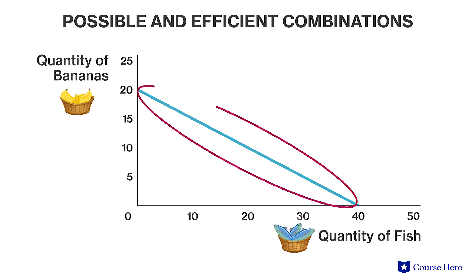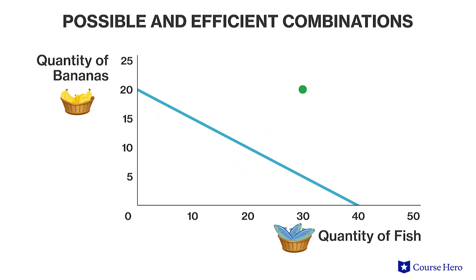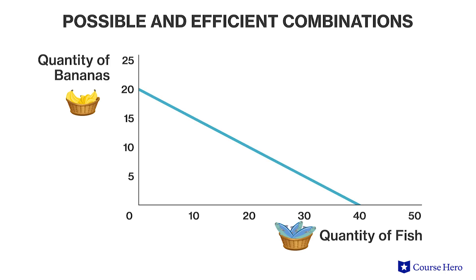By producing on the frontier, Jerry is catching the most fish possible given the amount of bananas he has gathered. All production points outside of Jerry's PPF are desirable because Jerry would like to have more of both goods, but this is not possible right now. One of the major assumptions is that Jerry's technology — his tools in this case — are fixed and cannot be changed. Given his available resources and technology, Jerry is constrained in his ability to catch fish and gather bananas, which is why we call the line a production possibility frontier: it shows the best Jerry can do given his current situation. If Jerry develops better tools or finds more time he can devote to gathering, that may shift his PPF outward.